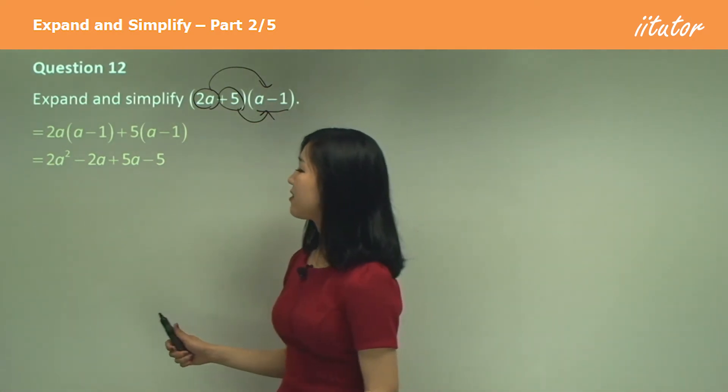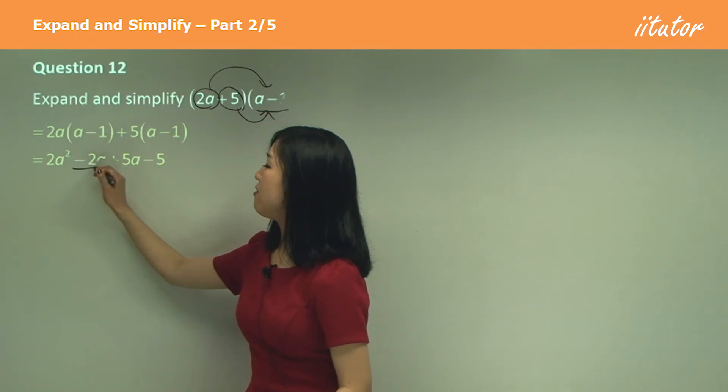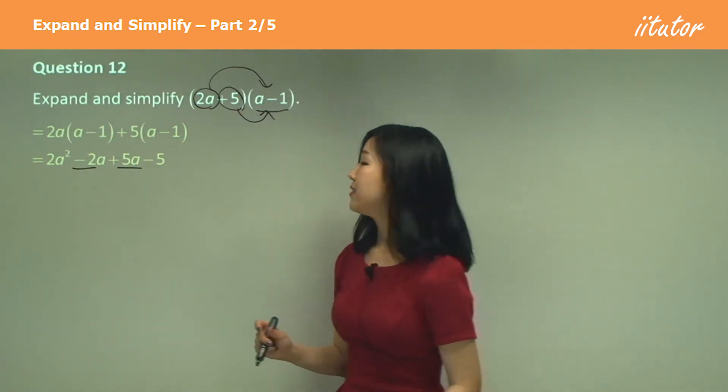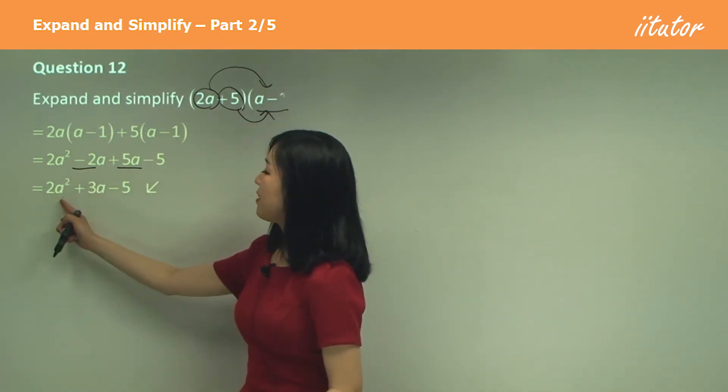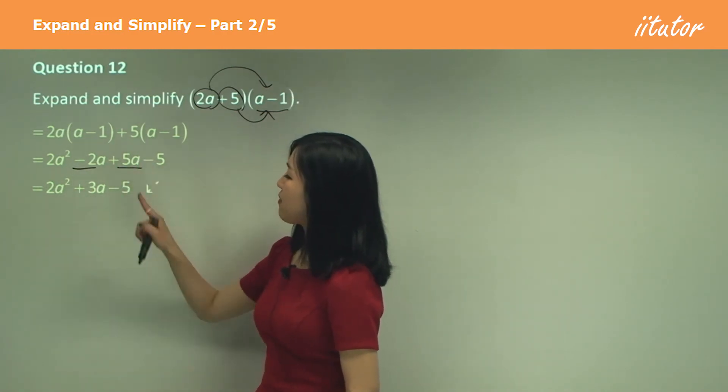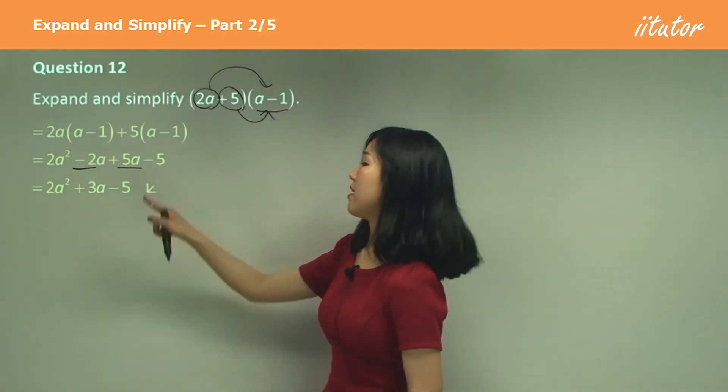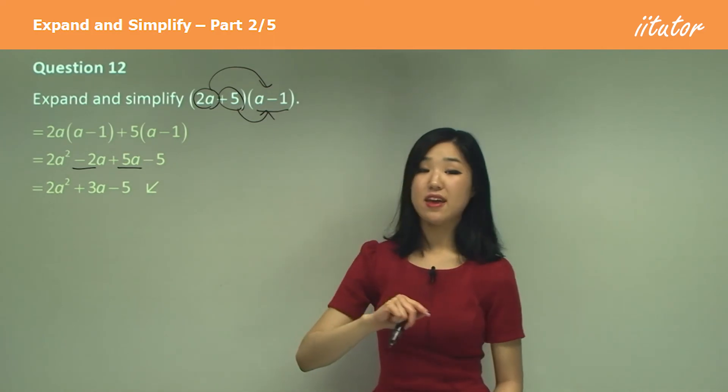And then gather up your like terms. The only like terms I have are these, the ones with the A. So two A squared remains minus two A plus five A is positive three A. And then we stick the negative five at the end. And that's it.